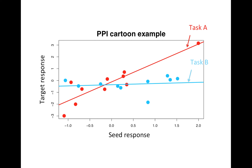GPPI isn't really a different PPI. It actually just follows the intuitive way that we would normally model an interaction, whereas regular PPI, due to how SPM sets it up, is not the most flexible model. Stepping outside of convolved things, if you think of a typical interaction model, here we have the seed response — the region we're using.